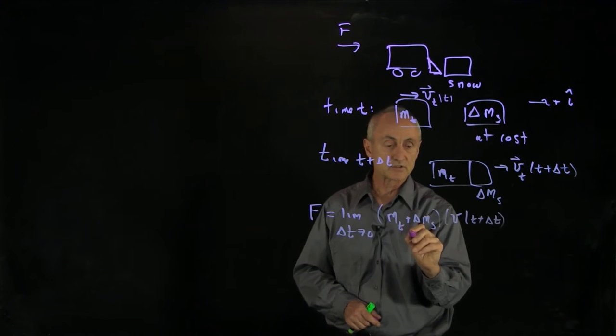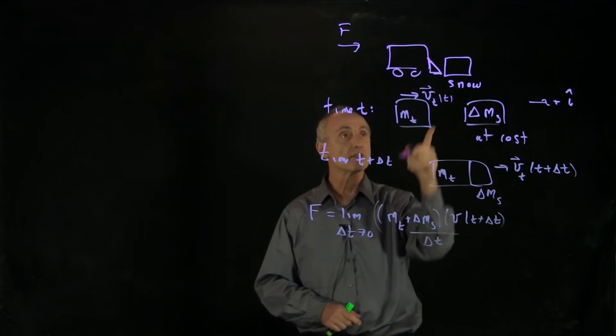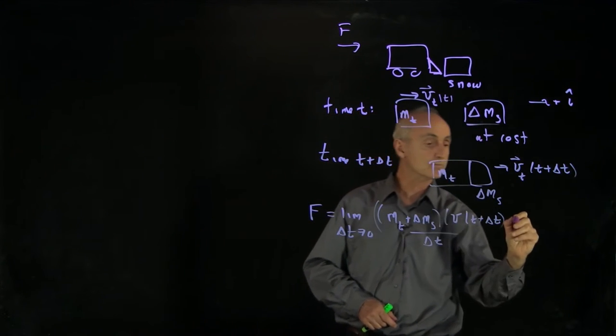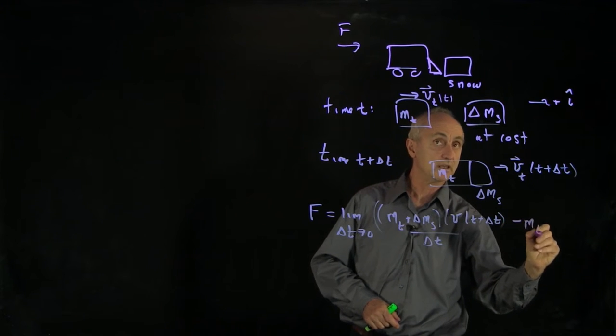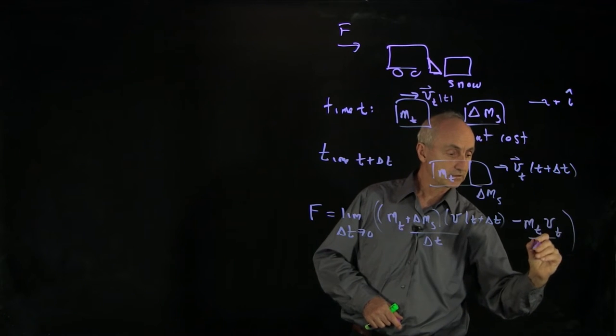And we have to subtract from this the momentum at time t. The snow is at rest. Only the truck is moving. So we have minus mt vt divided by delta t.